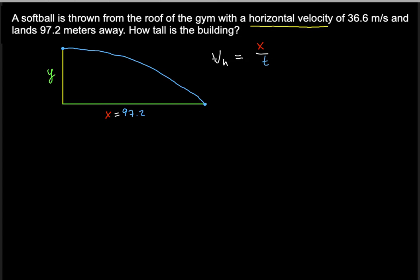Now notice that we are given the velocity, the horizontal velocity and we're given the 97.2, the horizontal distance. So we need to solve for the time. So how do we do that? I'm going to substitute 36.6 is equal to 97.2 divided by the t.